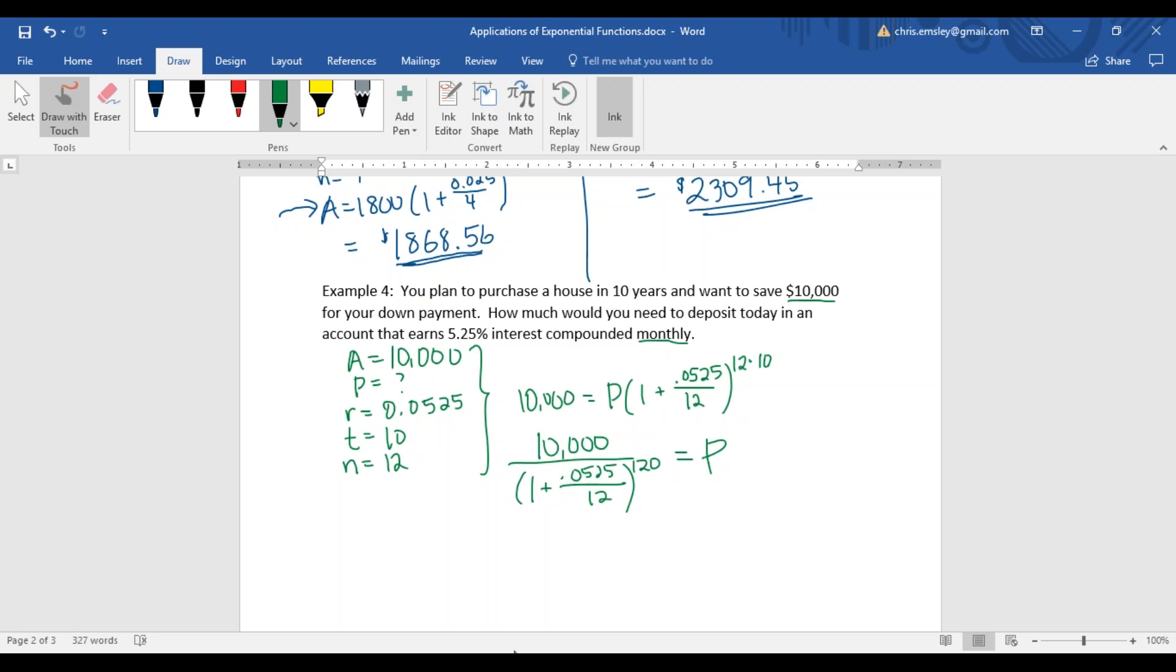If you can do that in your calculator all in one step or keep the number in your calculator so you don't round until you get to the very end. In this case, you should get that your present value, the amount you need to start with, would be $5,922.33.